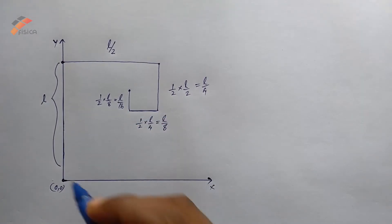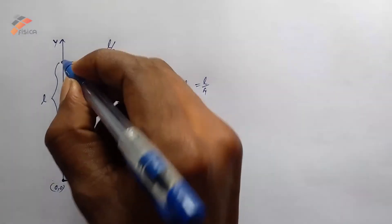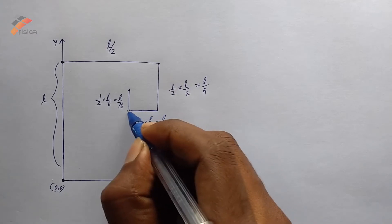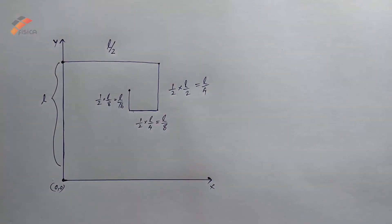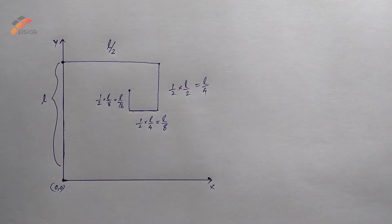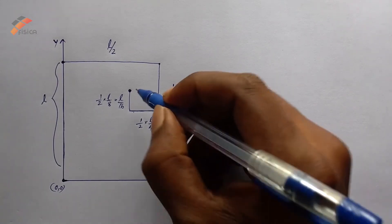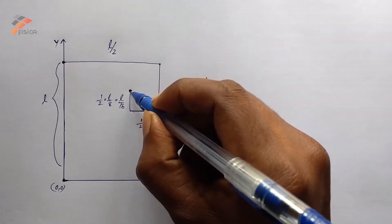So this is the first stage, second stage, third stage, fourth stage, and fifth stage. This is the condition given in the question. The question is to find out the coordinate at the end of its fifth stage — that is, the coordinate of this location.